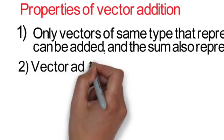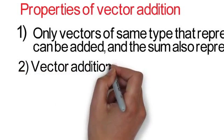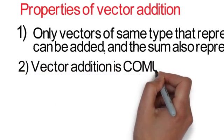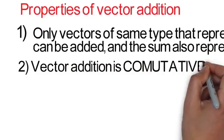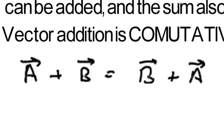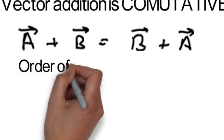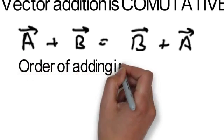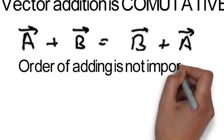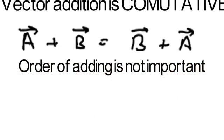Second, vector addition is commutative. It simply means vector a plus vector b is equal to vector b plus vector a. That is, the order of adding vectors is not important.